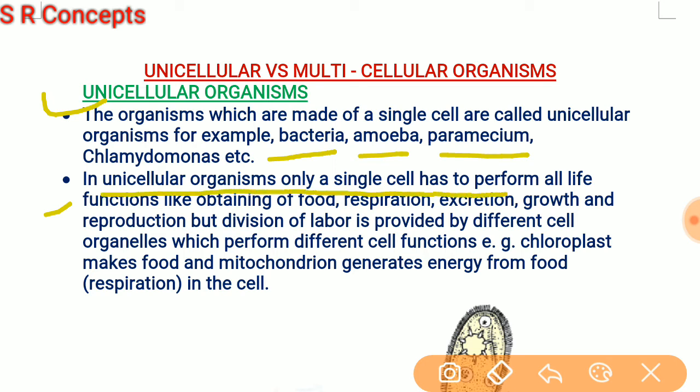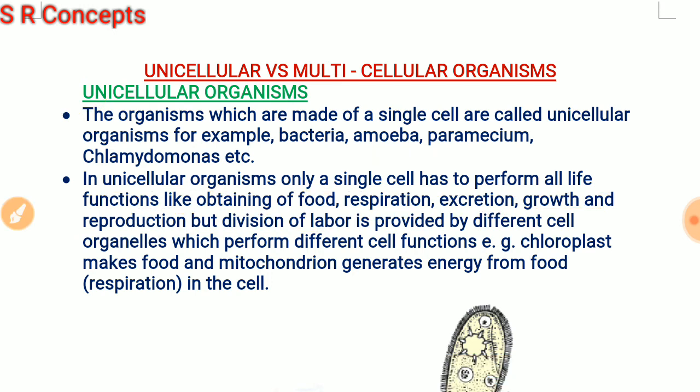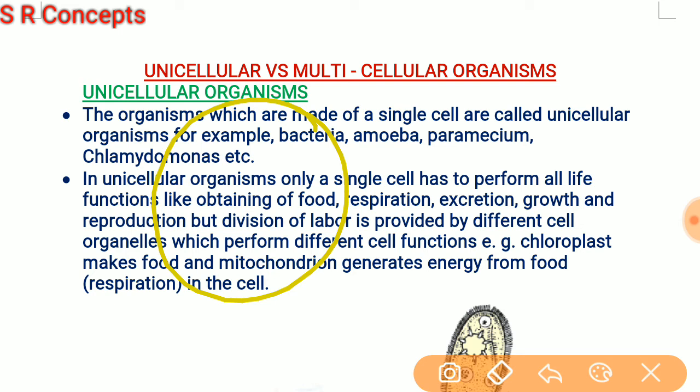In unicellular organisms, a single cell has to perform all life functions like obtaining food, respiration, excretion, growth, and reproduction. The division of labor is provided by different cell organelles which perform different functions. For example, chloroplasts produce food by photosynthesis, mitochondria generate energy from food, and the plasma membrane maintains the internal environment and regulates exchange of materials with the external environment.